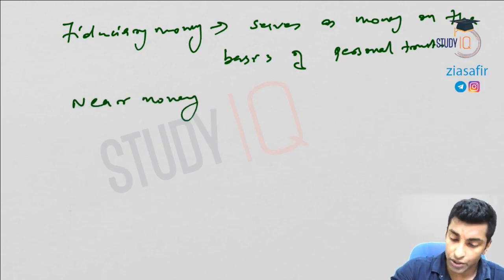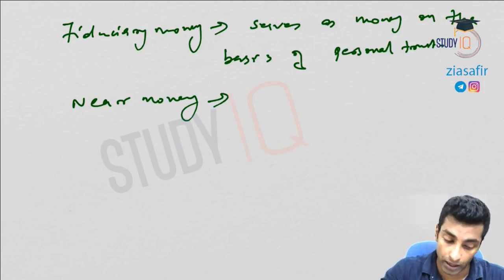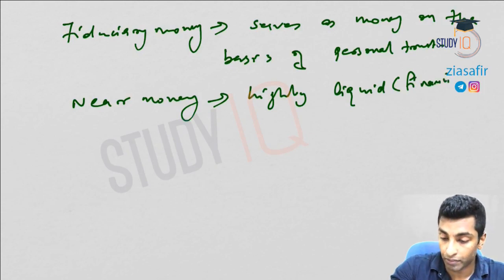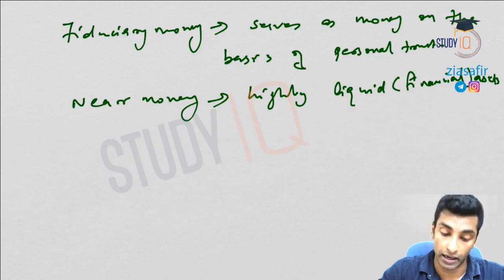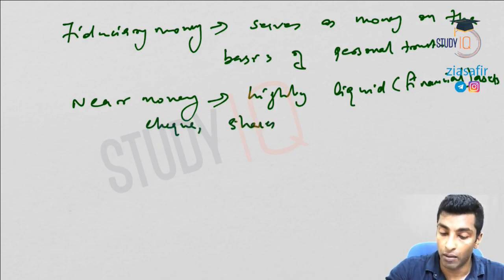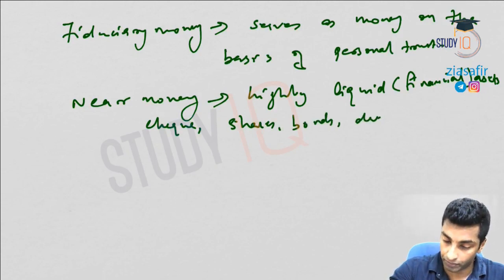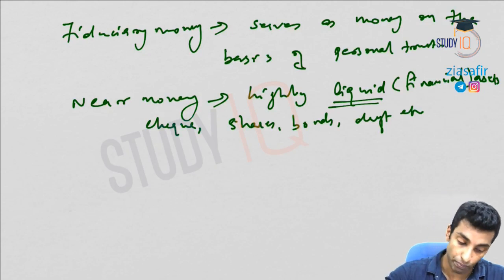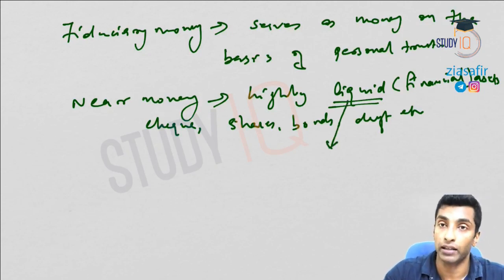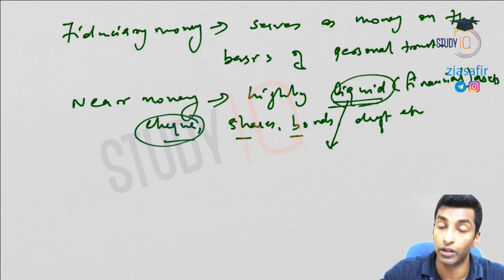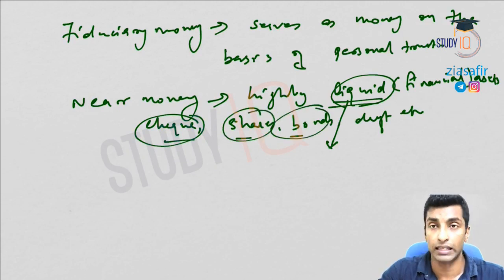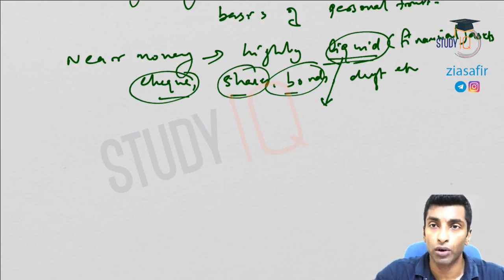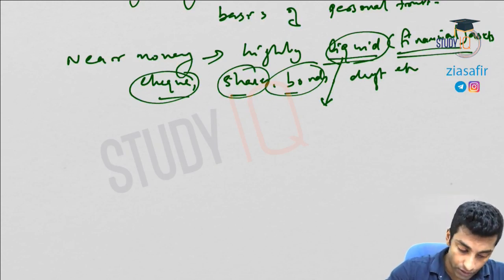Near money refers to highly liquid financial assets — the most liquid assets short of money itself. Examples include checks, shares, bonds, and drafts. Liquidity means ease of convertibility into rupees. These items are most liquid: you give a check to the bank and get money; shares and bonds can be sold anytime. Note this refers to financial assets, not physical assets like gold.